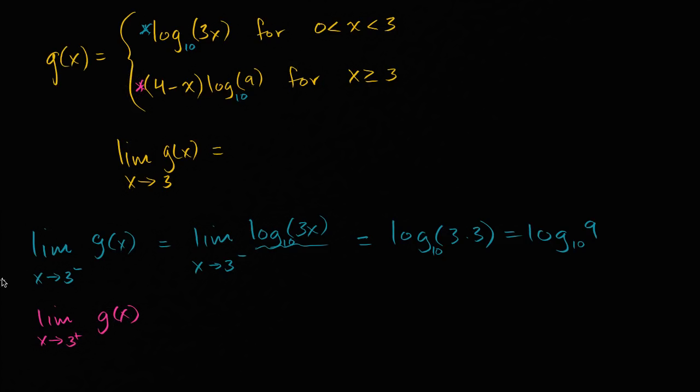Well, we are now going to be in this scenario right over there. So this is going to be equal to the limit as x approaches three from the positive direction, from the right hand side, of, well, g of x is in this clause when we are greater than three. So four minus x times log of nine.